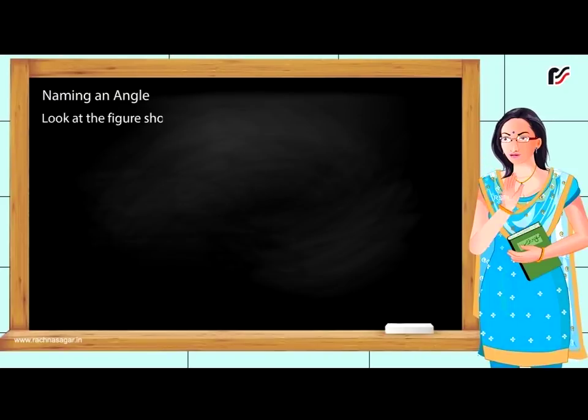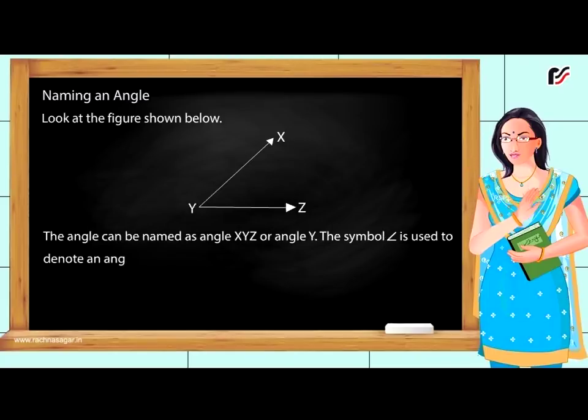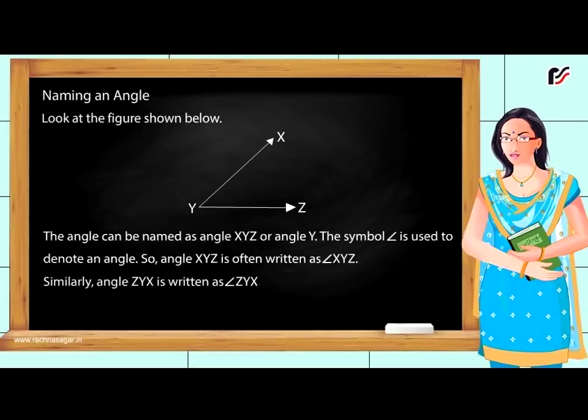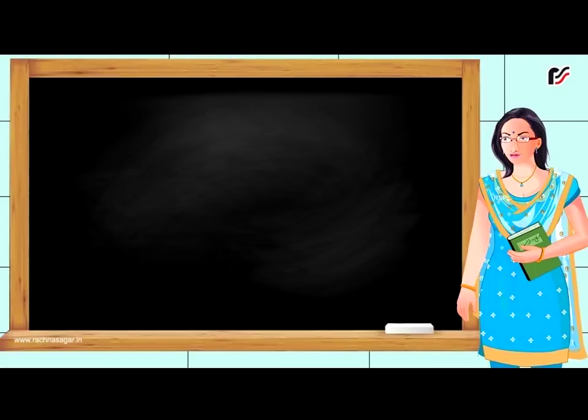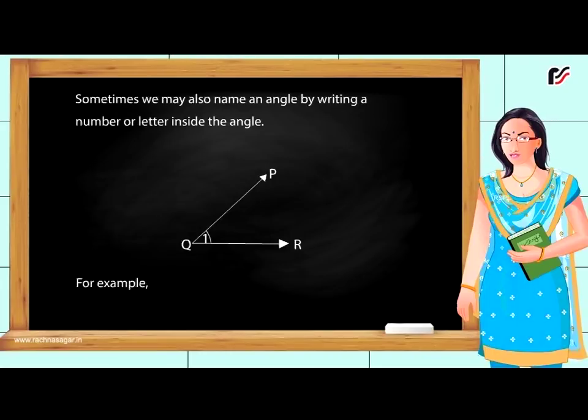The angle can be named as angle XYZ or angle Y. The symbol ∠ is used to denote an angle. So, angle XYZ is often written as ∠XYZ. Similarly, angle ZYX is written as ∠ZYX. Sometimes, we may also name an angle by writing a number or letter inside the angle. For example, in the given figure, we write angle PQR as angle 1.